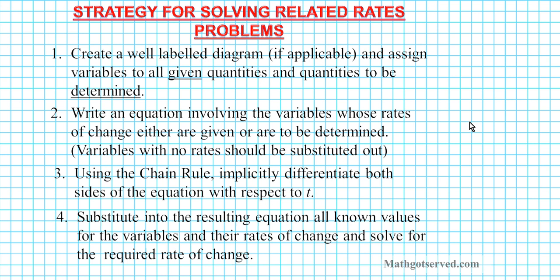Step two, you write an equation involving the variables whose rates of change either are given or are to be determined. Now this is the tricky part. In some problems, you will be given a variable whose rate of change is not provided. Now the goal is you always want to substitute out that variable in order for you to be able to solve the problem. Okay?